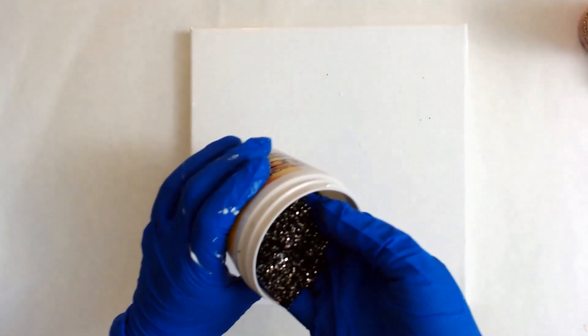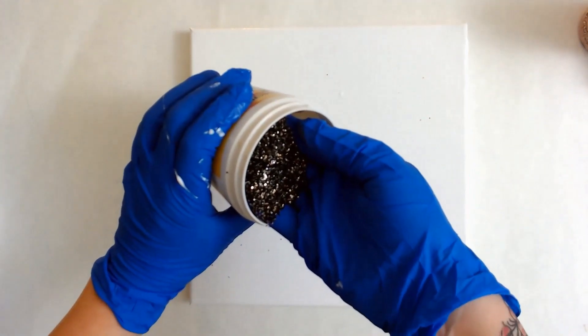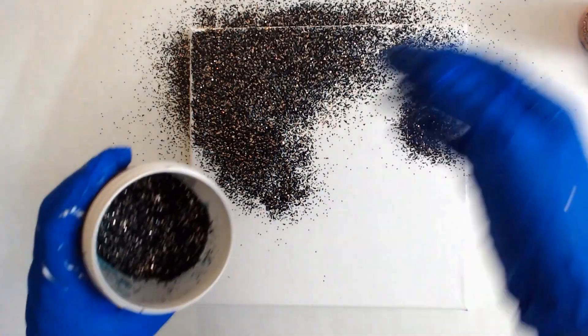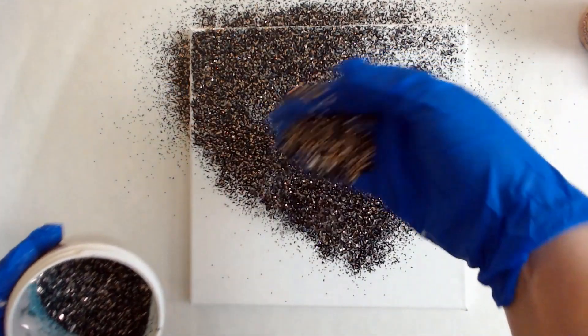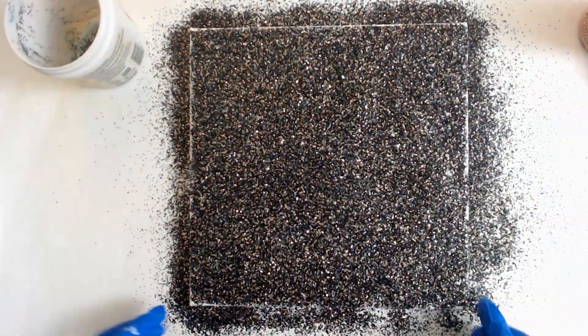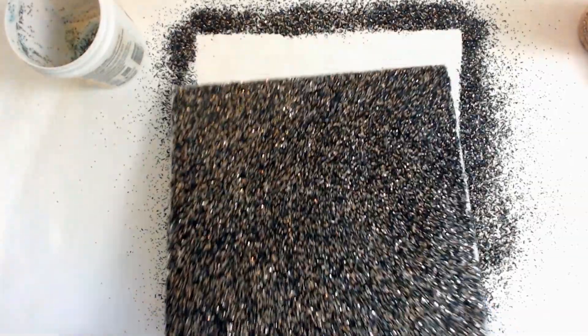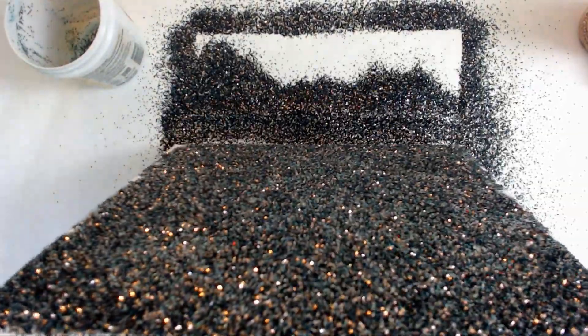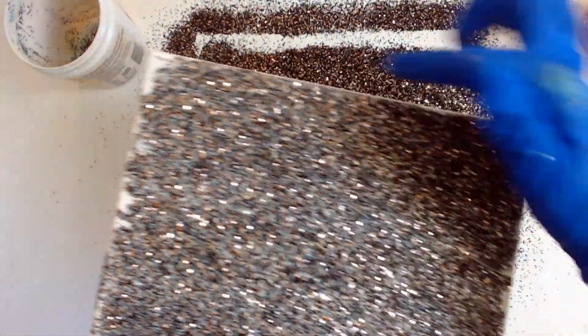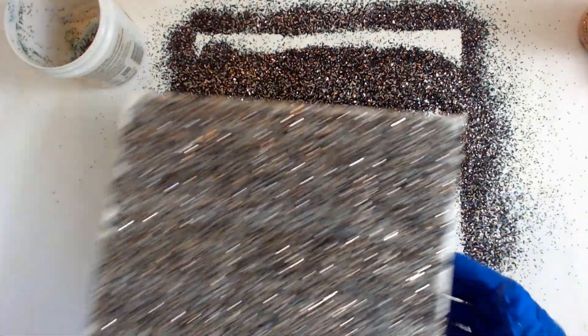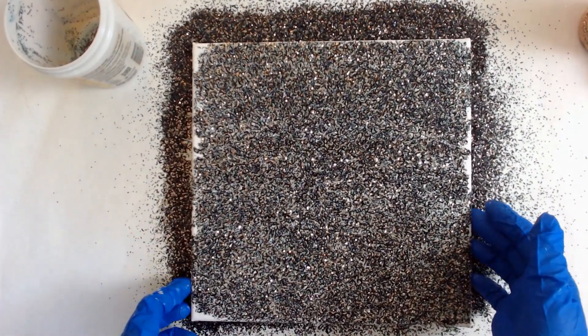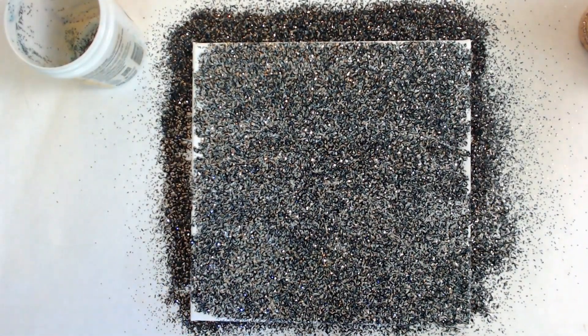Alright, so we've got our thin layer of Mod Podge. Now I'm going to take some glitter in my hand, just like this, and put down a layer so that I can no longer see the canvas. Nice. Alright, here we go. Not perfect. Got some edges that need covering, but that is just fine. So let's set that there and let it dry.